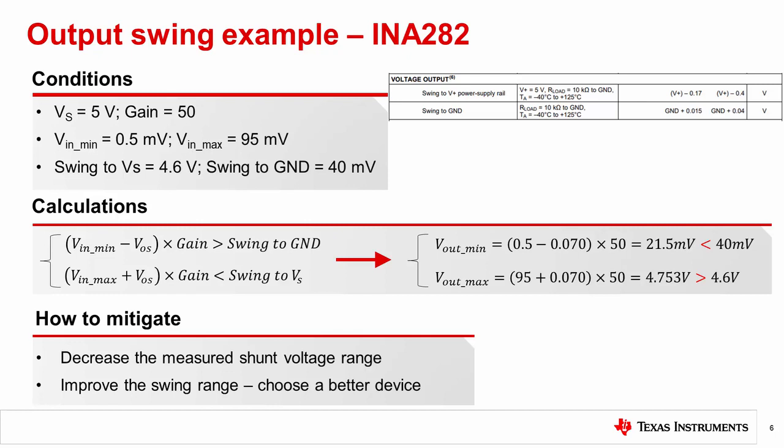How do we make it work? There are two possible ways to this approach. First, you can adjust the requirement and measurement range. Second, you can select a different device with a better swing to rail spec.